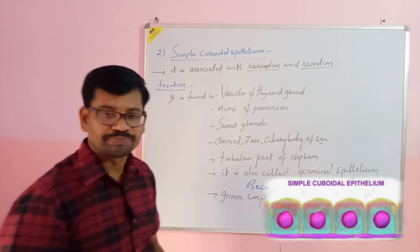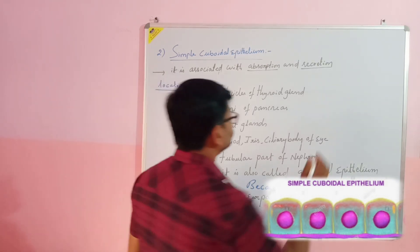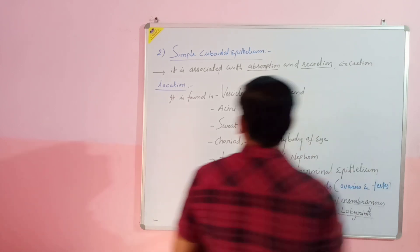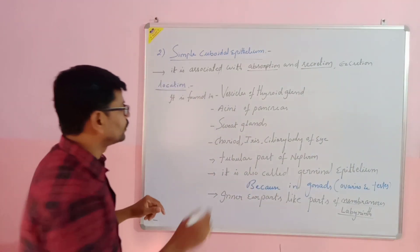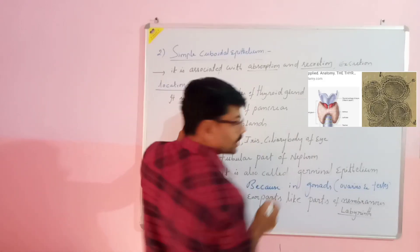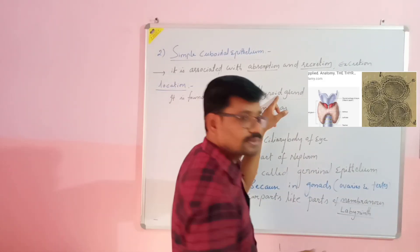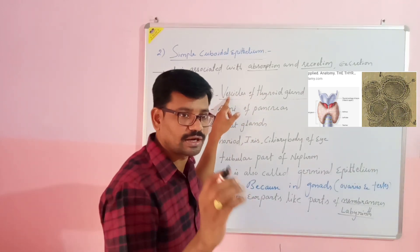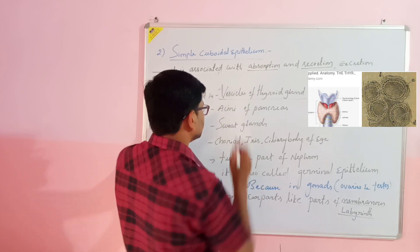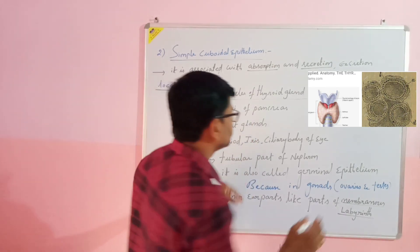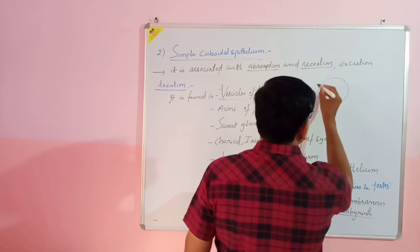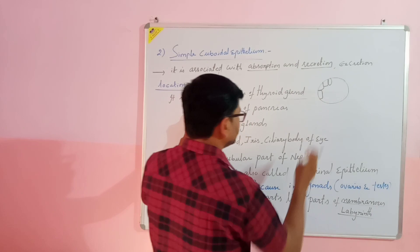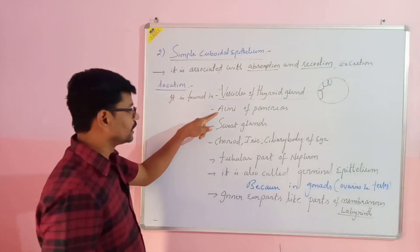Excretion also takes place in some areas. Now, where is it found in our body? The vesicles of the thyroid gland — the largest endocrine gland in our body — are the structural and functional units of the thyroid gland, and these vesicles are made up of simple cuboidal epithelial tissue.